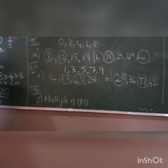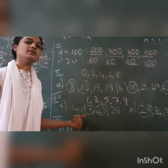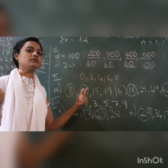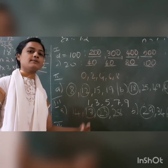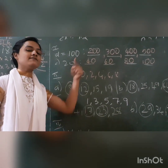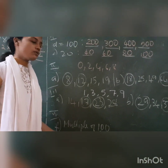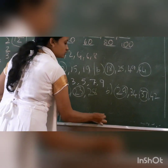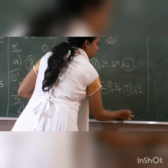Next you have skip counting. Skip counting is nothing but tables. If I ask you to write skip countings of 2, you write the 2 times table answers: 2, 4, 6, 8, 10. If in 5: 5, 10, 15, 20, 25. For 100: 100, 200, 300, 400, 500. They have given blanks — you fill only as many numbers as there are blanks.